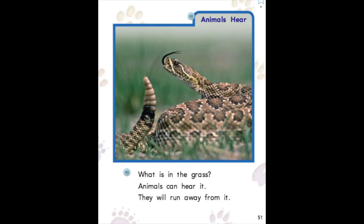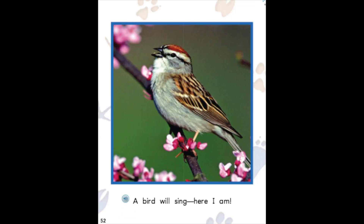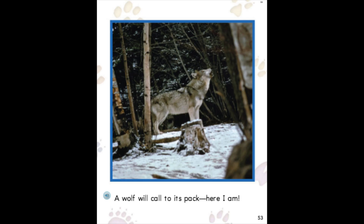The heading on page 51 says Animals Hear. That heading is going to let me know that I'm going to be reading about animals and how other animals can hear different sounds that they make. For example, on page 51, I see a picture of a rattlesnake, and it says animals can hear it — they will run away from it. I learned that other animals will listen to the sounds that different animals make as a warning. Also, under the heading Animals Hear, I learned about how a bird will sing to other birds to let them know that he is here. And finally, under the heading Animals Hear, I learned about how a wolf will call to its pack, and that's a way that the other animals can hear his message.